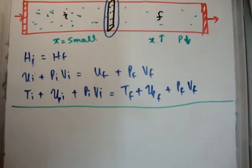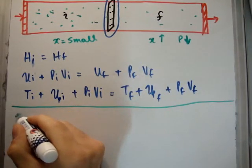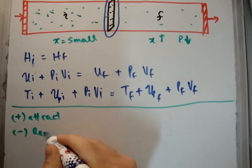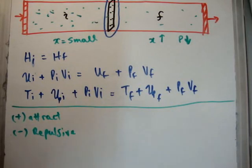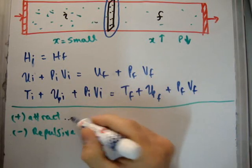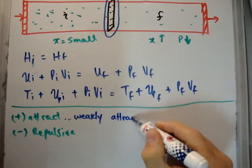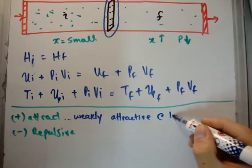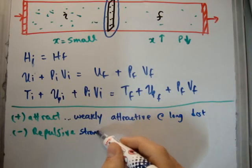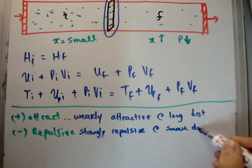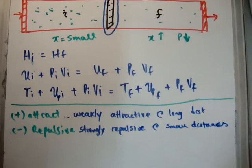So we know that there are different types of forces. There is a positive attractive force and there is a repulsive force. So this is attractive and this is repulsive. So under most conditions, the attractive forces dominate because the attractive forces are weakly attractive at long distances. And these ones are strongly repulsive at small distances.